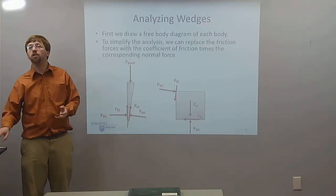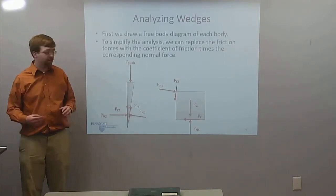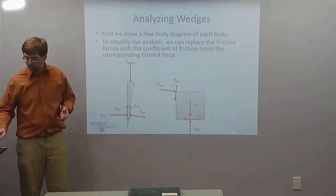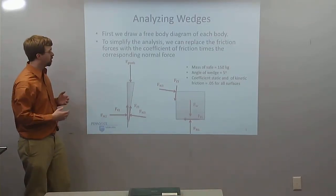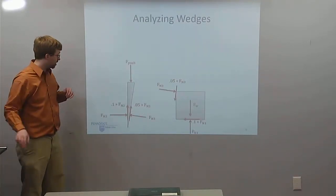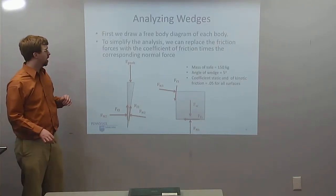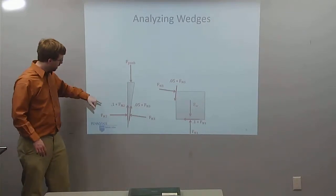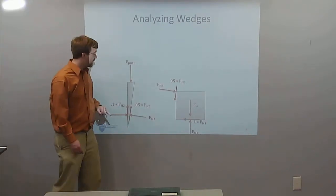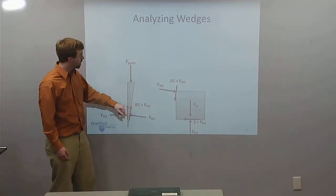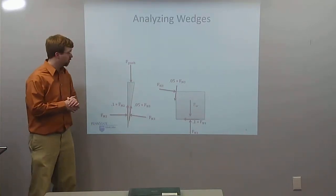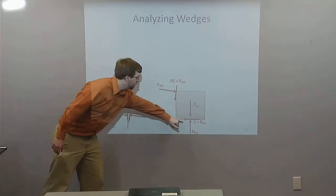To simplify, we look at the friction forces and relate them to the normal forces, since they come in pairs. If we know the coefficients of friction — say the coefficient between the wall and wedge is 0.1, so 0.1 times Fn — and the coefficient between the safe and the wedge is 0.05, so 0.05 times Fn3 — we can replace the friction force variables and relate all friction forces to their corresponding normal forces, including the friction force at the base of the safe.